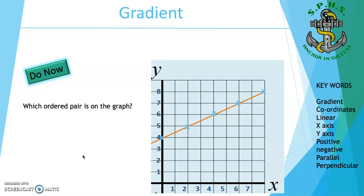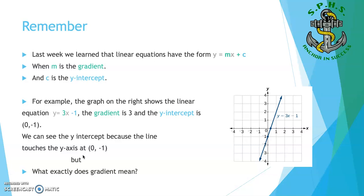Do now, which ordered pair is on the graph? Remember, last week we learned that linear equations have the form y equals mx plus c, where m is the gradient and c is the y intercept. For example, the graph on the right shows the linear equation y equals 3x minus 1. The gradient is 3 and the y-intercept is (0, -1). We can see the y-intercept because the line touches the y-axis at the point (0, -1). But what exactly does the gradient mean?